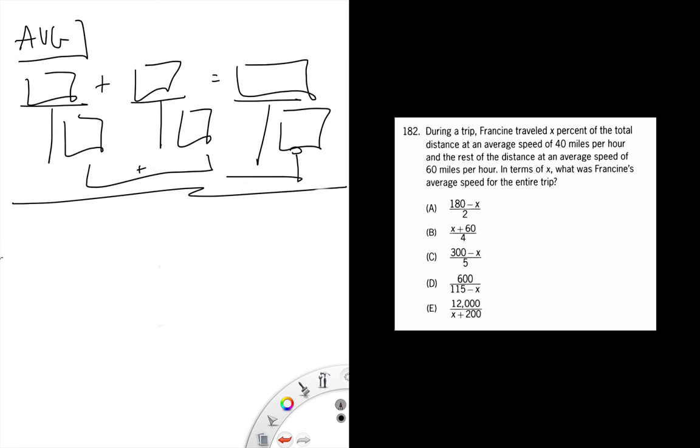You can pick numbers for this one. The process is very similar. Pop in the rates, the given. We're not given the distance so you could just pick it. I would pick a multiple of 40 and 60, so 120 for each is great.